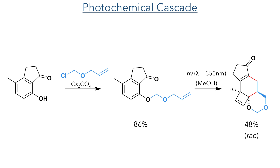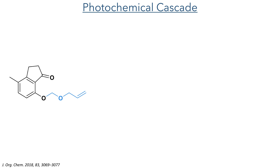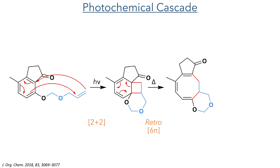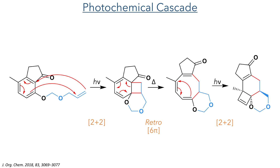The first alkylation was carried out using chloroethyl allyl ether and cesium carbonate as a base, to produce the third compound in an 86% yield. This compound was then irradiated at 350 nm for 5.5 hours in degassed methanol, to carry out a photochemical cascade to produce a racemic mixture of the product in a 48% yield. This cascade starts off with a 2+2 cycloaddition between the allyl group and the aromatic ring, producing a cyclic 6-membered acetal and a 4-membered cyclobutane ring. This intermediate undergoes a thermal disrotatory ring opening to relieve the strain of the 4-membered ring and form a cyclooctatriene intermediate. Further irradiation promotes another 2+2 cycloaddition to form the product, finishing the construction of two new 6-membered rings and the formation of a 4-membered cyclobutane ring.